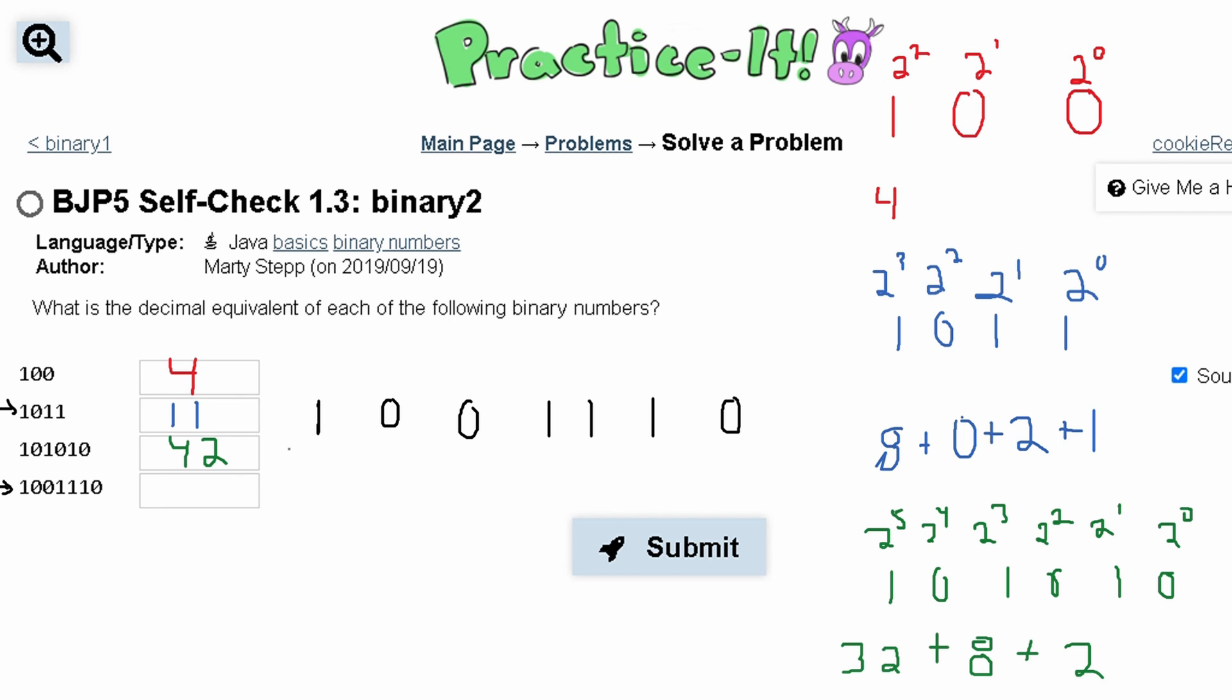We are given the binary value 1 0 0 1 1 1 0. To convert this into a number we do the same thing. We write out the powers of 2 here. The first value being 2 to the 0th power, the next 2 to the 1st, then 2 to the 2nd, 2 to the 3rd, 4th, 5th, and lastly 2 to the 6th.